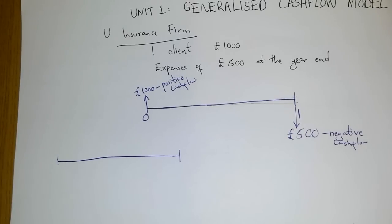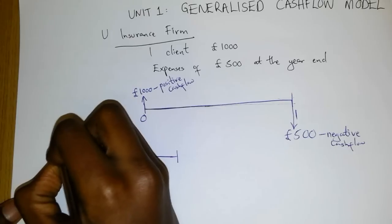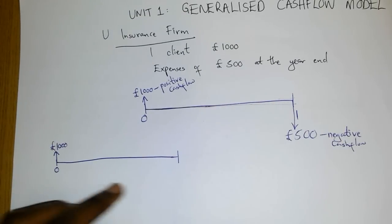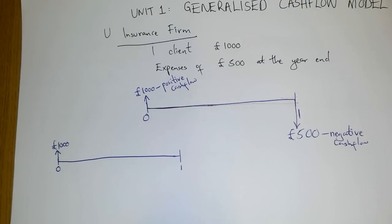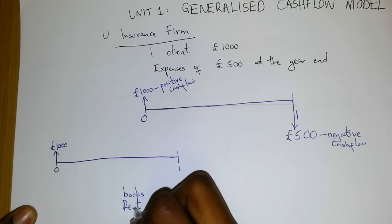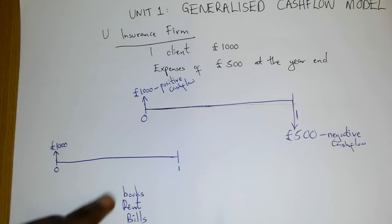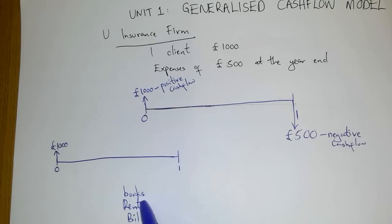Say you're going off to uni and your parents give you a thousand pounds as you're leaving home — let's say at time zero. You're off to uni for a period of one year. In your mind, you know you will have to buy books, pay your rent, and pay a few bills. However, you may not know the exact amount you have to spend on books, rent, or bills.